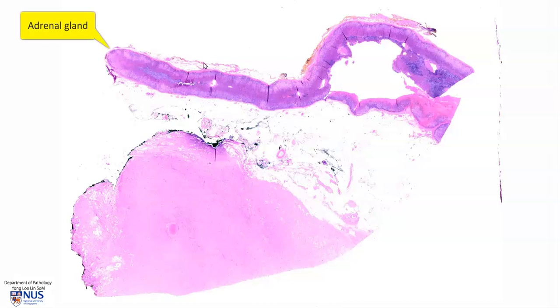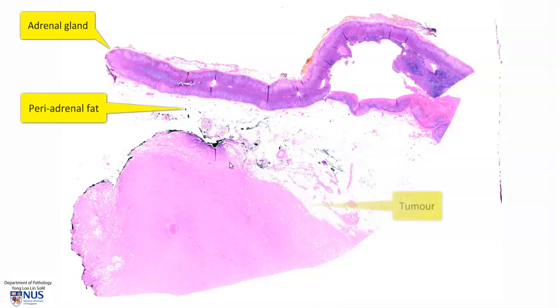We have the adrenal gland here, which is normal, periadrenal fat, and we have the tumor.